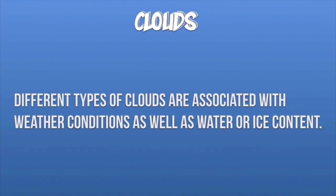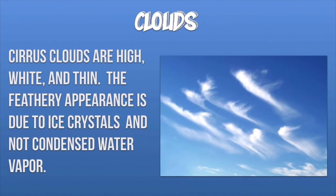Clouds are often associated with different weather conditions as well as water or ice content. The three main types of clouds are as follows. The first type, which forms relatively high up in the troposphere, are cirrus clouds. They are high, white, and thin, with a feathery appearance due to their composition of ice crystals instead of condensed water vapor.